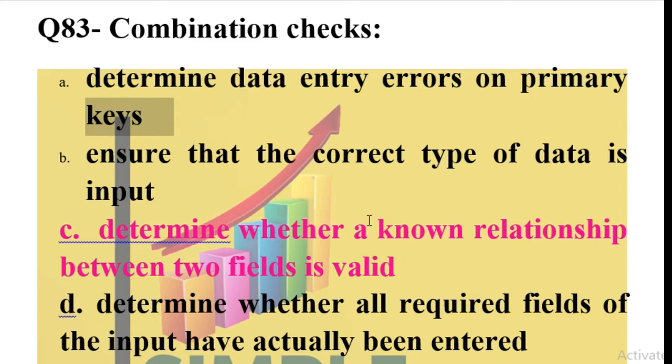Determine whether all required fields of the input have actually been entered? This is also not checked. Combination checks only check whether the primary key and foreign key relationship is valid.